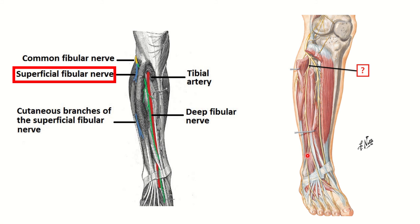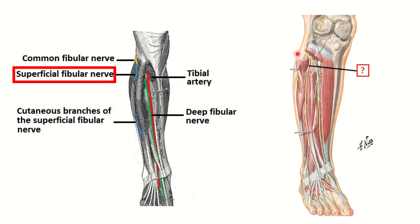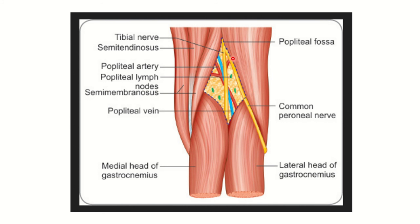In the popliteal fossa, we can see the common peroneal nerve. It arises from the sciatic nerve — from the sciatic nerve, two nerves arise: one is the common peroneal nerve and another is the tibial nerve. The common peroneal nerve arises at the upper part of the popliteal fossa. This is an important exam point: the common peroneal nerve and tibial nerve both arise from the sciatic nerve at the upper part of the popliteal fossa.